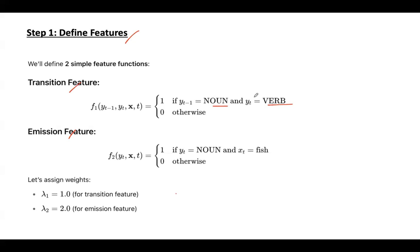This is the current tag and these are previous tags. If this condition is satisfied then only this feature fires, otherwise the value remains zero. The emission feature checks if the word is fish and the tag assigned to that is noun. If this is the scenario then it fires, otherwise the value remains zero.